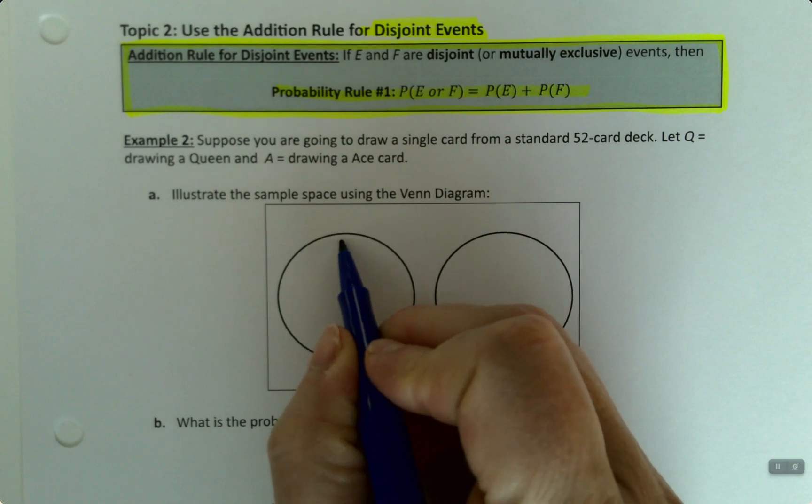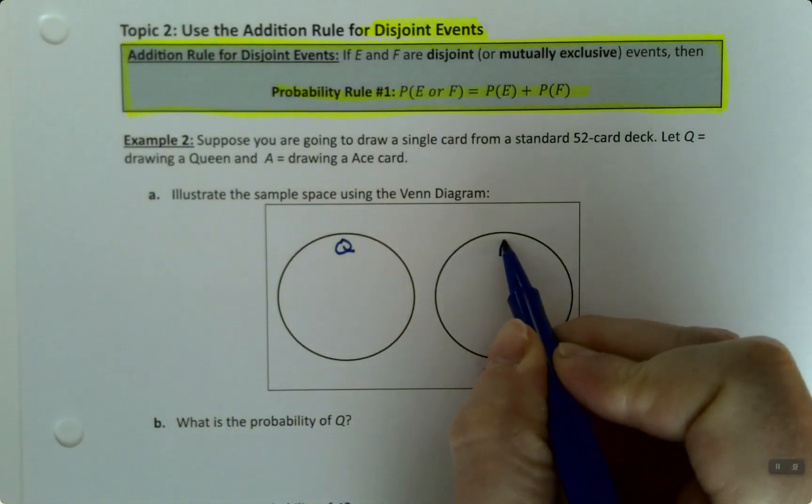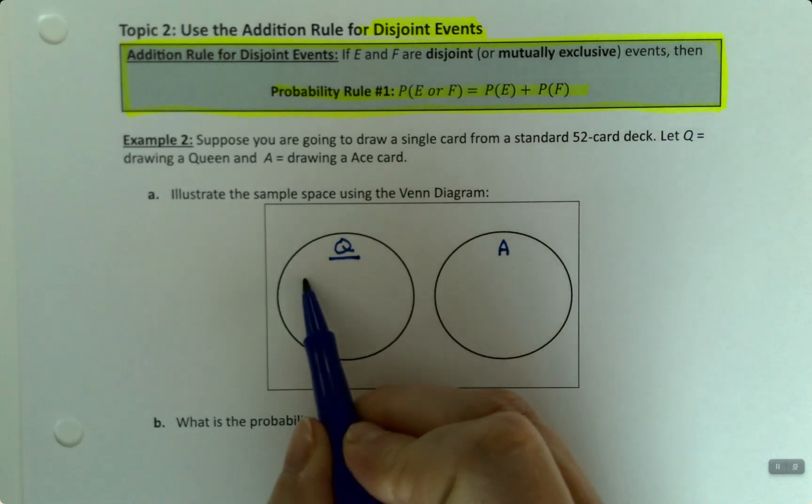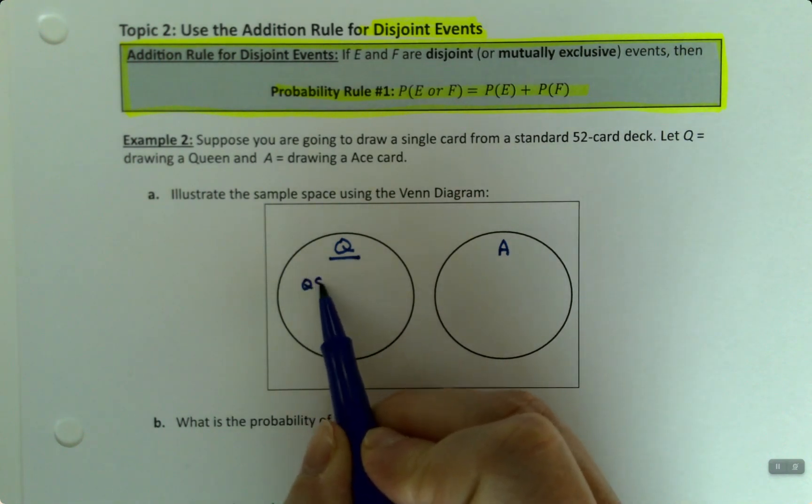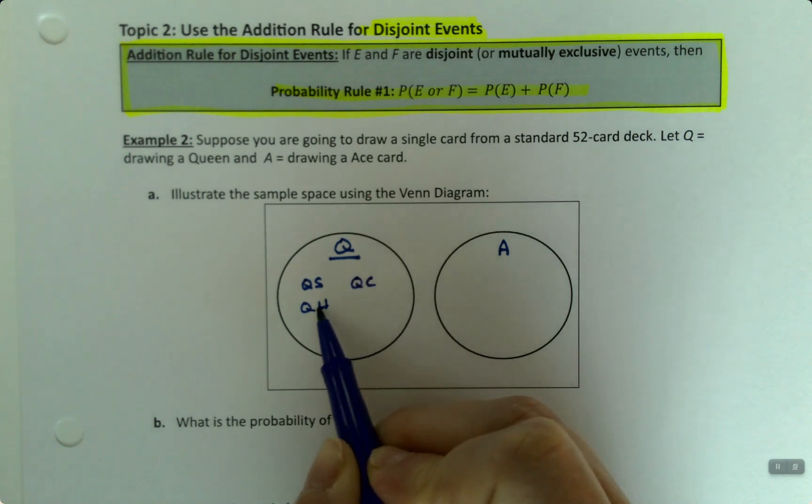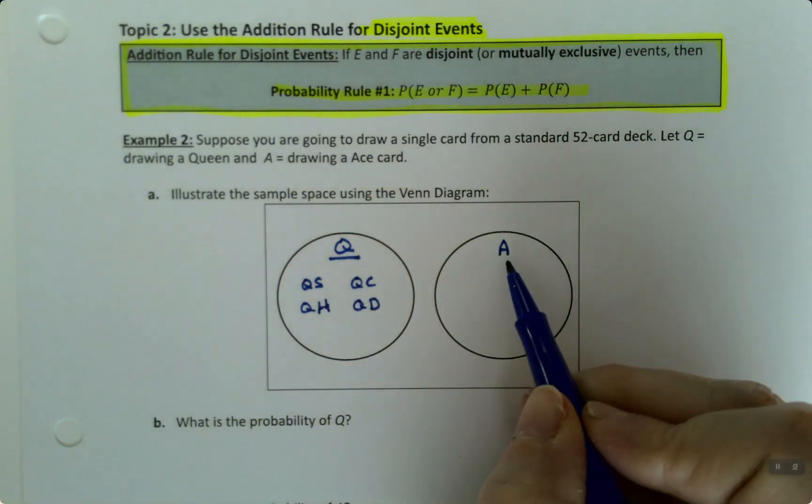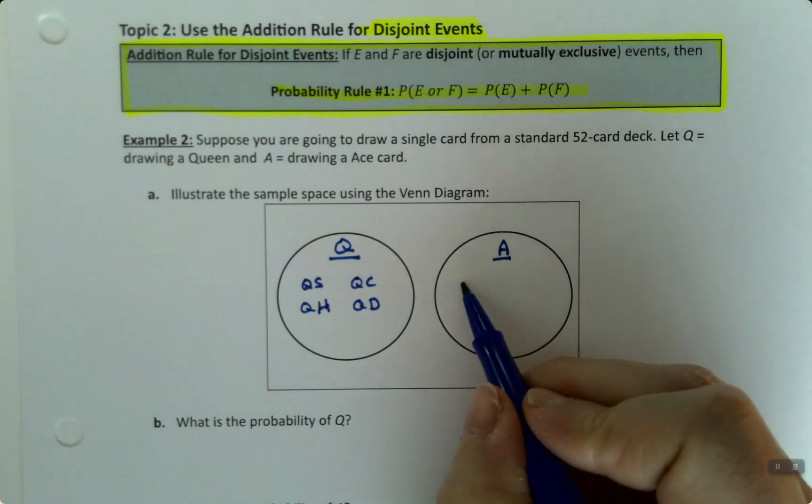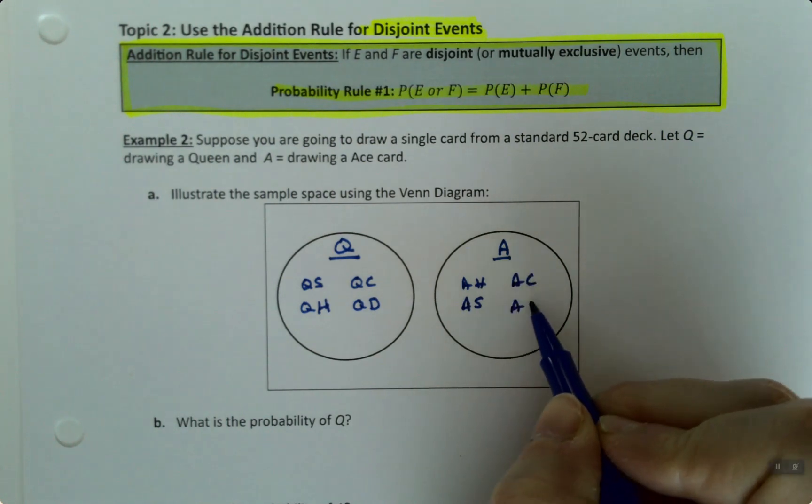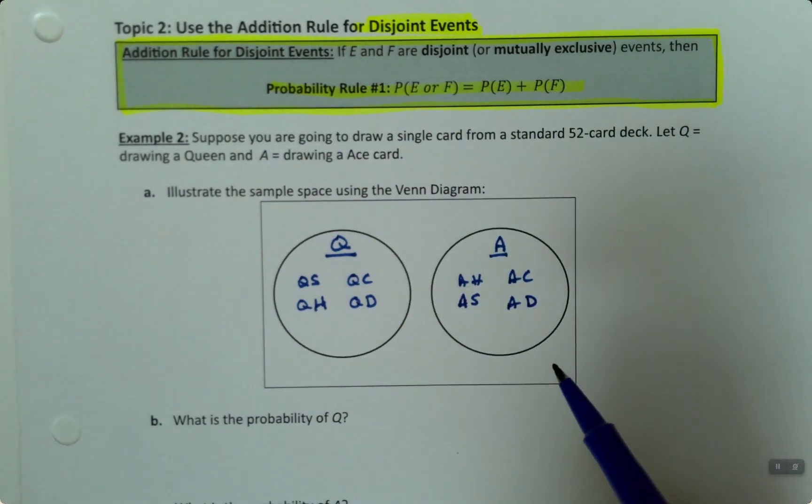So this will be Q over here. This will be A over here. So over in the Q side, we have the queen of spades, queen of hearts, the queen of clubs, and the queen of diamonds. Over on the ace side, we have the ace of hearts, the ace of spades, the ace of clubs, and the ace of diamonds.